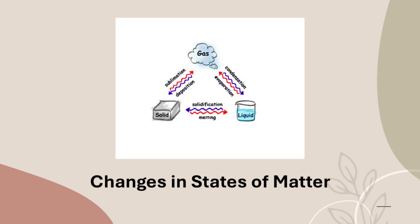Now, coming to the changes in state of matter. Matter can be changed from one state to another by heating or by cooling. The process by which a solid changes into a liquid on heating is called melting. For example, when you heat ice cubes they will turn into water — this change from solid to liquid is called melting.